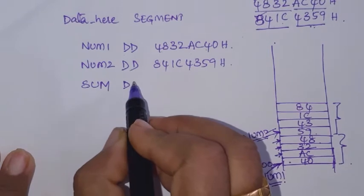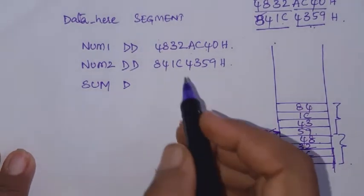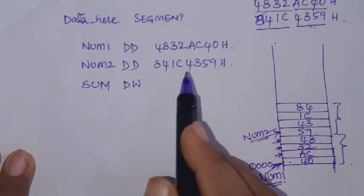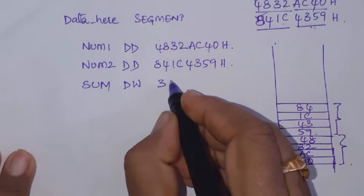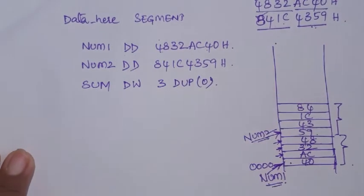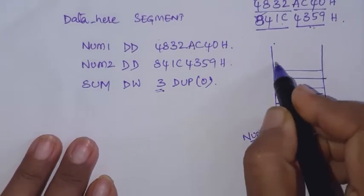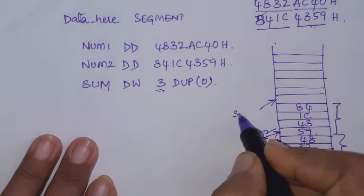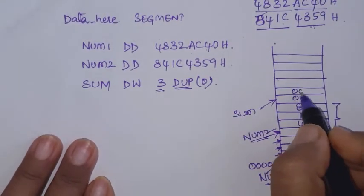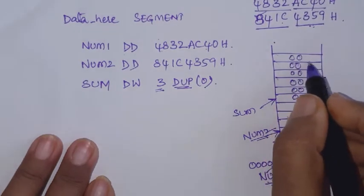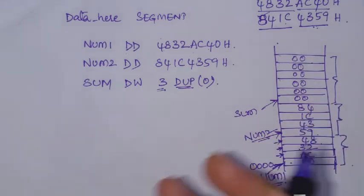You get a 32-bit result and one more bit — a 33-bit result is possible because there can be a carry out of the most significant byte. So you can declare it as three words and initialize them with 3 DUP of zero. With this, three words are allocated and the name of this is 'sum'. All the memory locations are initialized with zeros. This is how memory allocation is done for the result — memory space is reserved for sum.